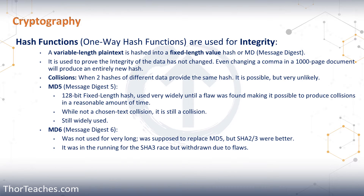Hashing is a one-way function, meaning it is not reversible — which is how it is supposed to work. We don't need to decrypt anything; we just need to make sure no files were changed. The input is variable length plaintext, and the output is a fixed-length hash, also called a message digest. It doesn't matter how long the input text is — it can be one sentence or an entire book. The size of the input does not matter; the output is always fixed length.